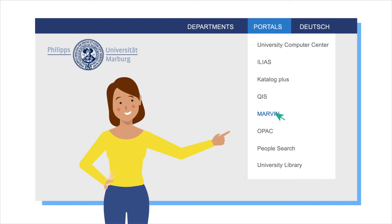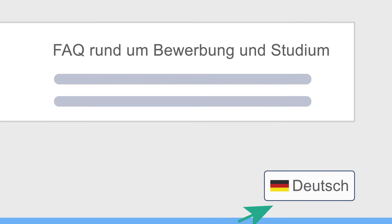Welcome to Marvin, the University of Marburg's integrated campus management system. Before we start, let's change the language to English, here in the lower right corner of the Marvin website.